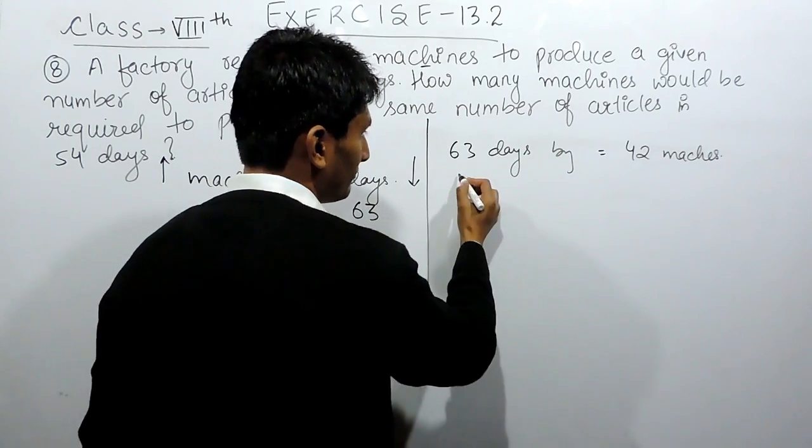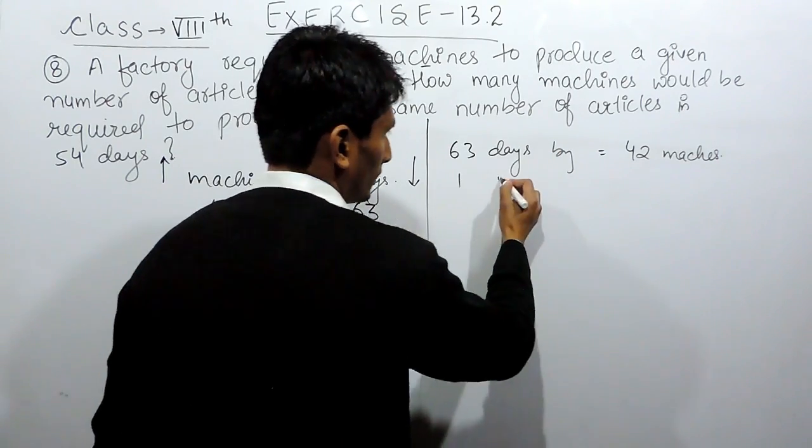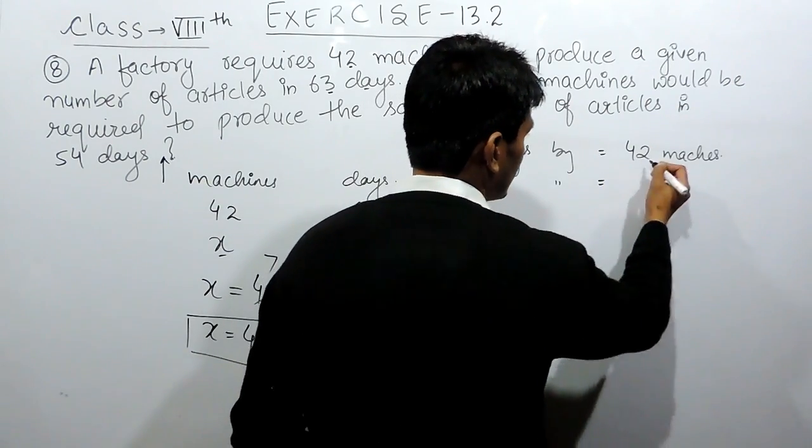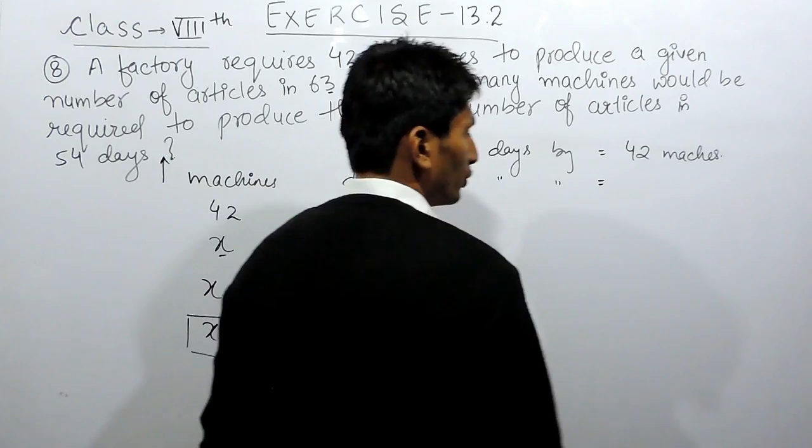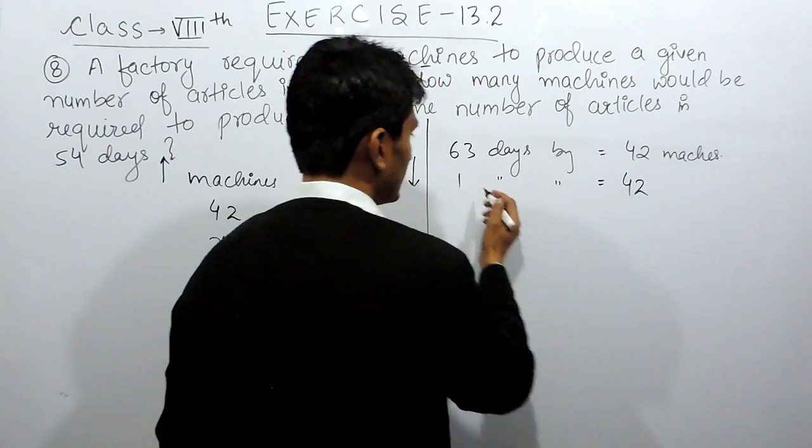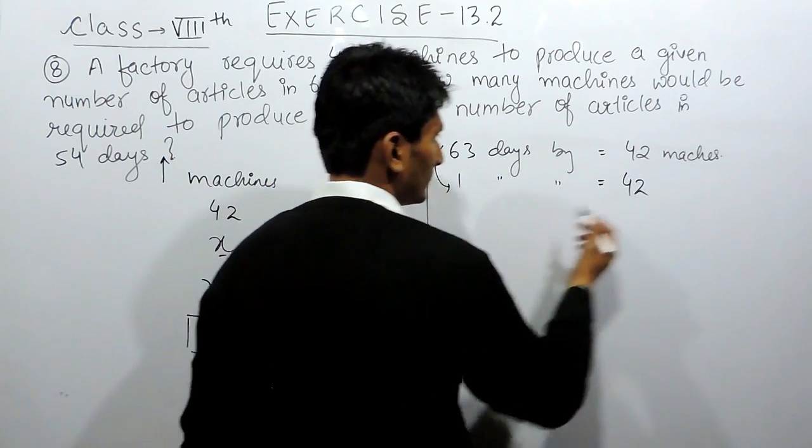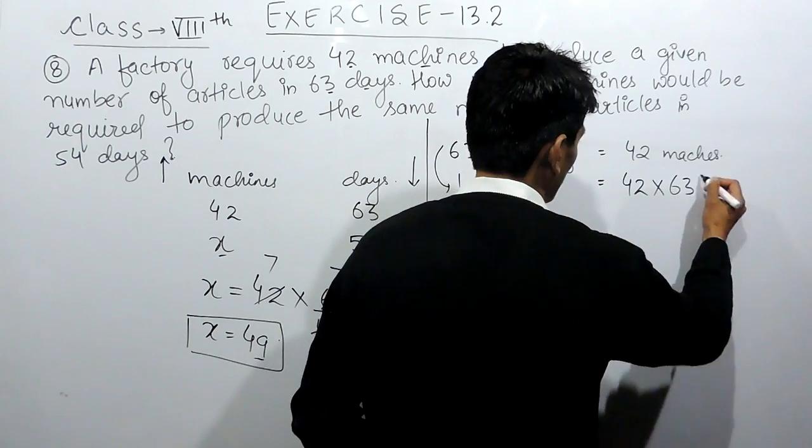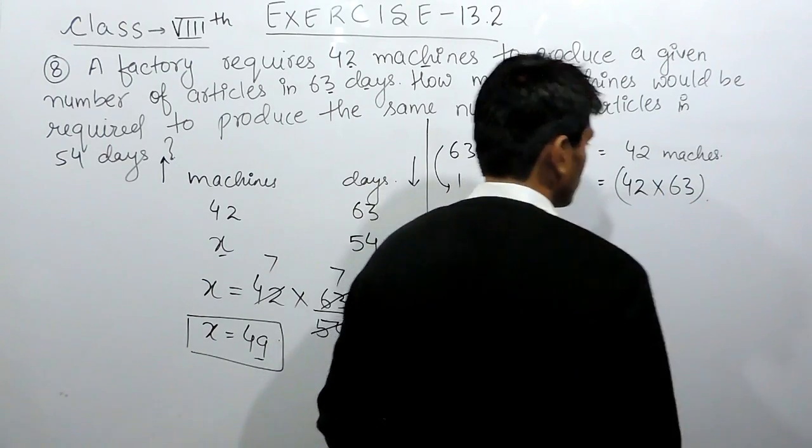If I have to complete this work in one day, the number of machines that I would be requiring will be more. So obviously, when the days are less, the machines will be more. So this will be 63 into 42. So these many numbers of machines will be required.